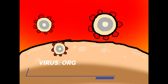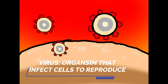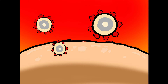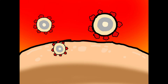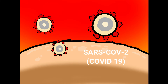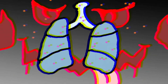We all know that viruses are organisms that invade other cells to reproduce. Coronaviruses come in different types. Only seven coronaviruses infect humans. Two of these cause the diseases called SARS and MERS. But today, we'll talk about SARS-CoV-2, the coronavirus that causes the disease COVID-19.